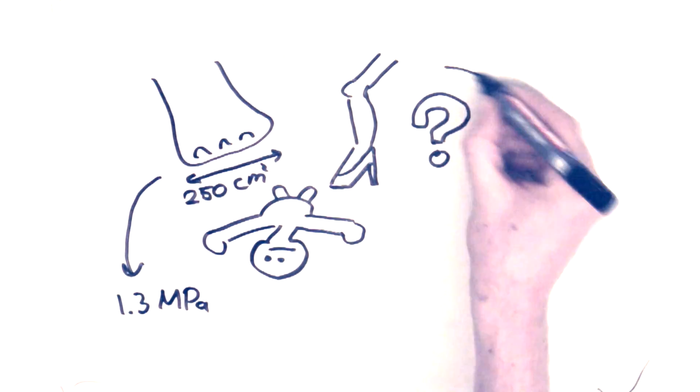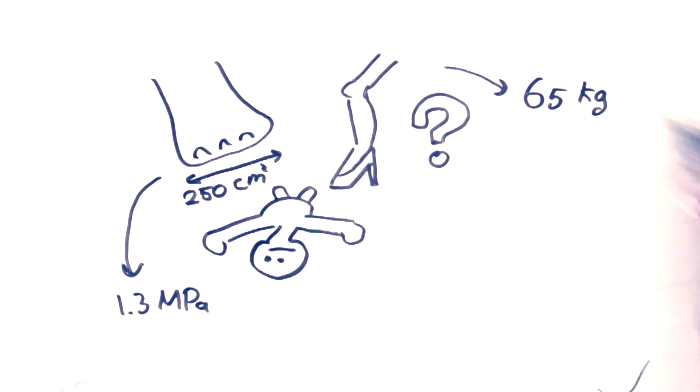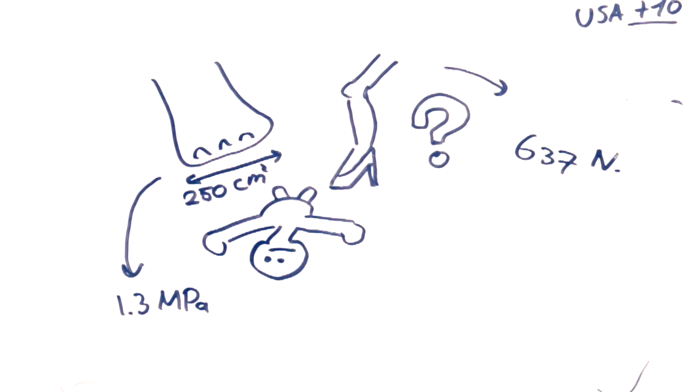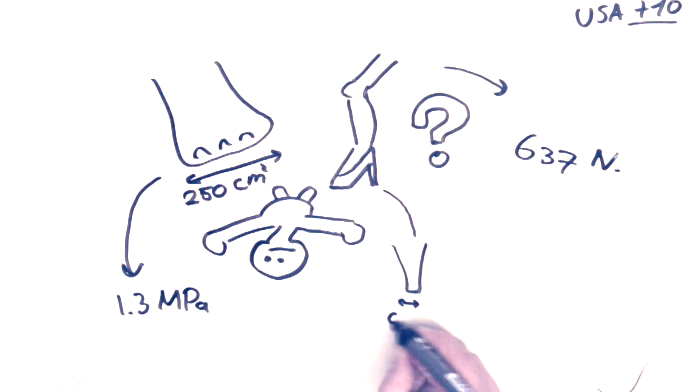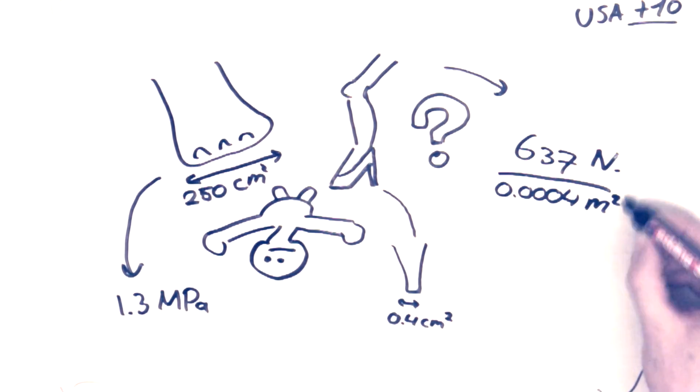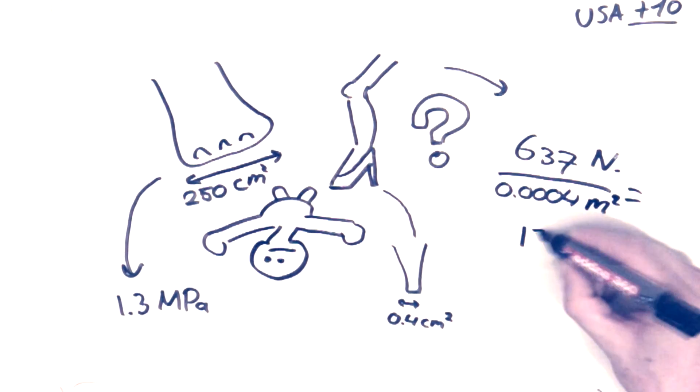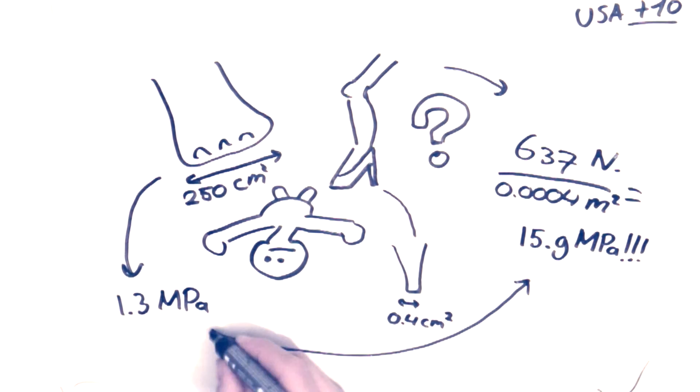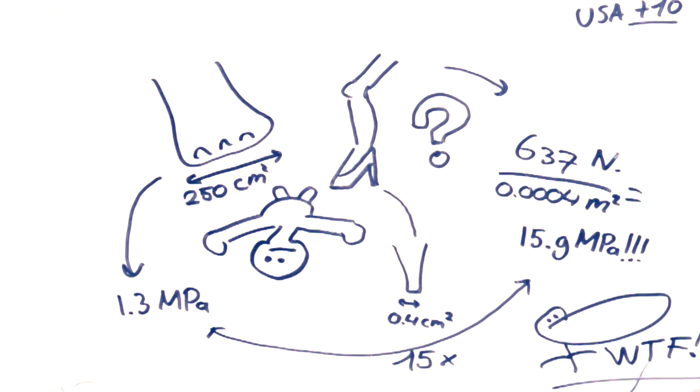Now onto the high heel, the weight of an average woman is about 65 kilos, 10 more if you live in the USA, is 637 newton. But the problem is the very small area of the stiletto heel, it's 0.4 square centimeters. So if we divide the force by the area, we end up with a whopping 15.9 megapascal, which is 15 times as much as the elephant. What the fuck?